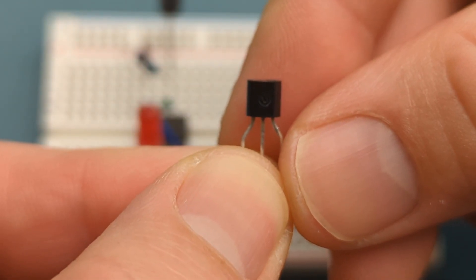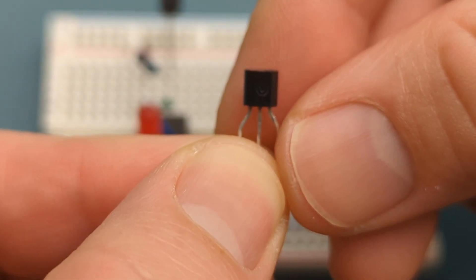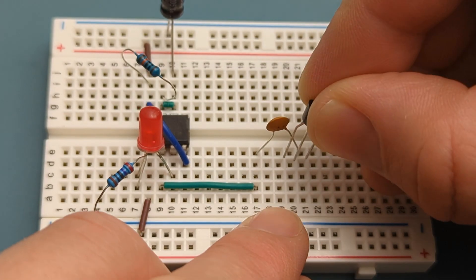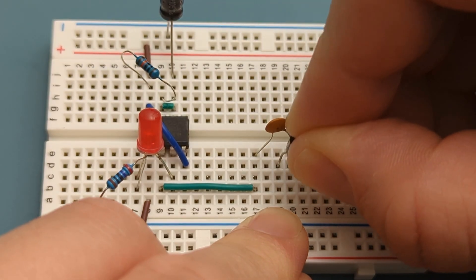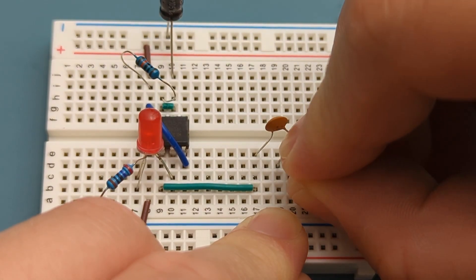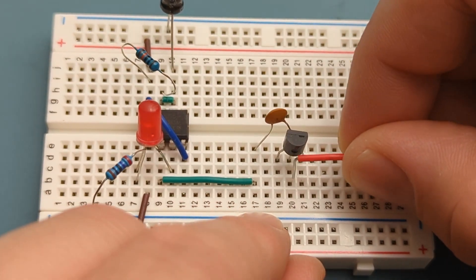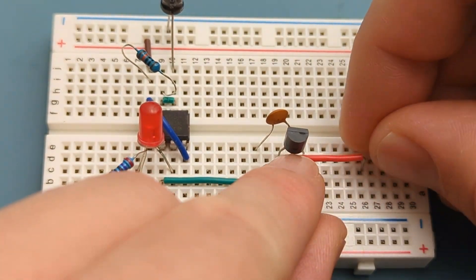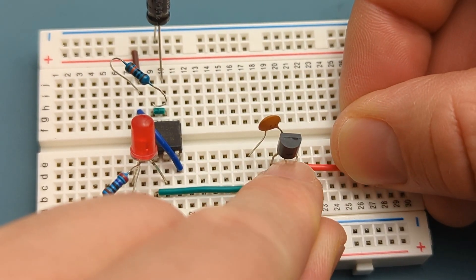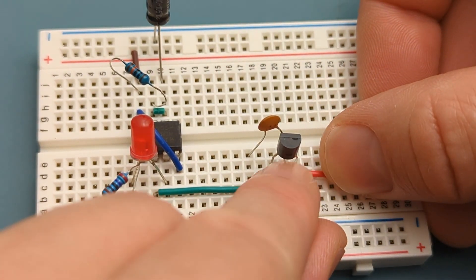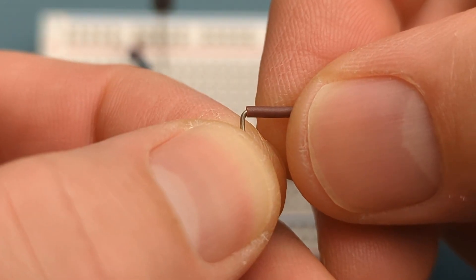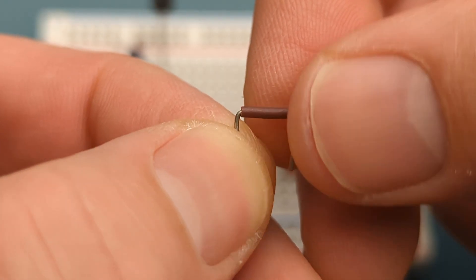Insert the BC547 below the capacitor. The collector is in the same row as one leg of the capacitor. Insert a jumper wire in the same row as the base of the transistor and a few rows below it. Insert a jumper wire in the same row as the emitter and the negative rail.